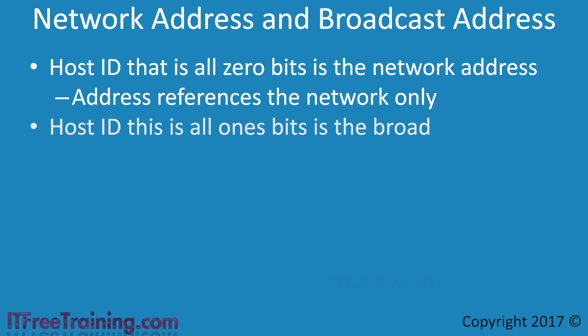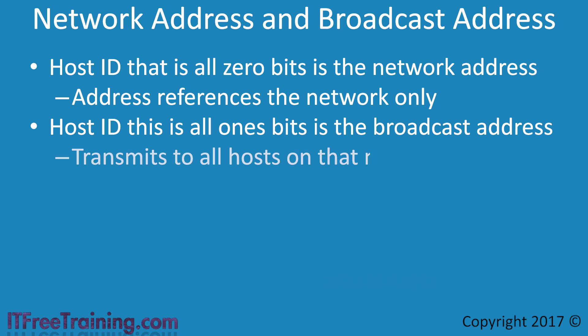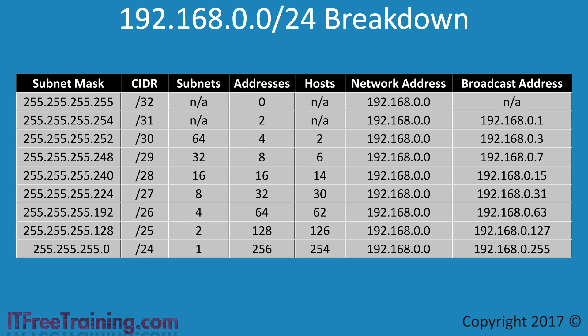In contrast, any host ID that is all 1 bits is considered to be the broadcast address. A broadcast address transmits the same network transmission to all hosts on that network. The number of usable hosts per subnet is always 2 less than the possible addresses, because 2 addresses are always used for the network and broadcast address. In the case of 31 bits used for the subnet mask, allocating network and broadcast addresses leaves no hosts — so is there ever a need to use this subnet mask?